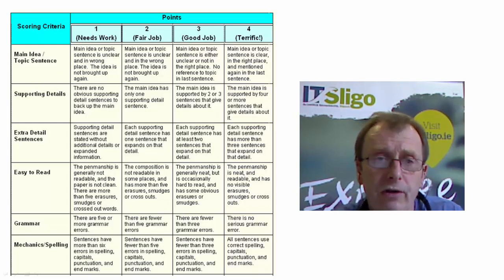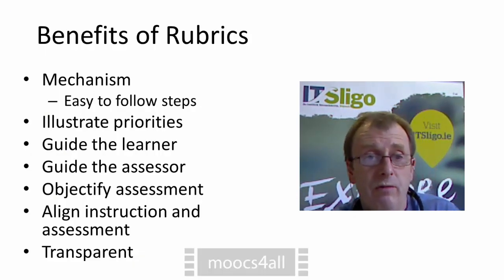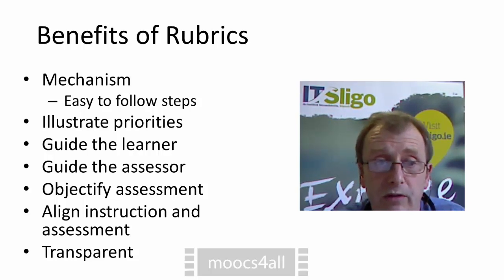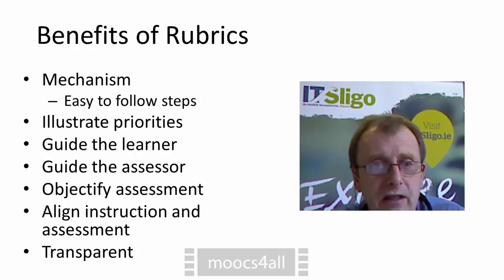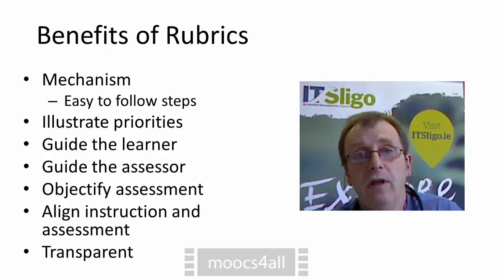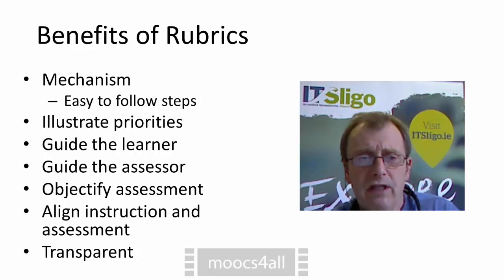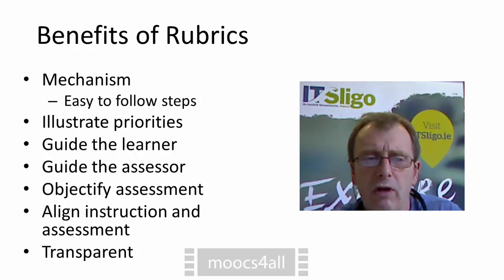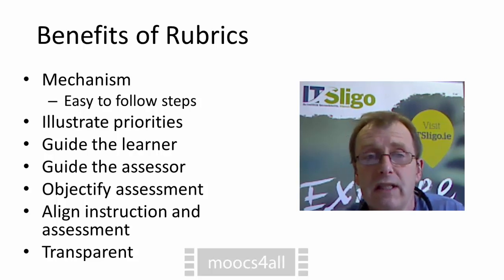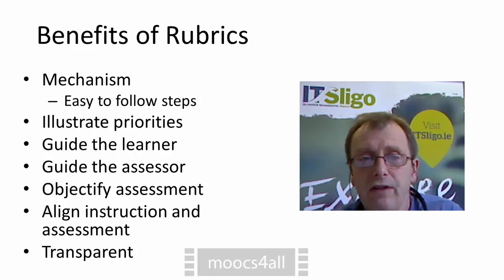If these are prepared in advance, they will not only help people grade, but also help people prepare for the assignment. The benefits of rubrics are as follows: it's a mechanism with easy-to-follow steps for the people doing grading. It illustrates the priorities or the objectives of the assessment, and in doing so it guides both the learner and the assessor in working with the assessment. It moves towards making the assessment more objective. These types of assessments are considered to be subjective, but this makes them more objective and more repeatable. There is more likelihood that different graders will give a similar grade to the assessment submitted. It also helps you to align the instruction and the assessment, so that your learning objectives are covered in your content and in the assessment as well.